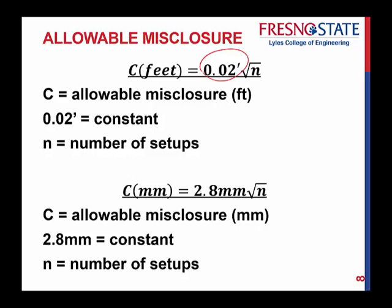If we're working in metric units, the allowable misclosure calculated in millimeters is equal to 2.8 millimeters times the square root of N. So 2.8 is the constant and N is the number of setups. This allows us to account for errors that fall within an acceptable range for our projects.